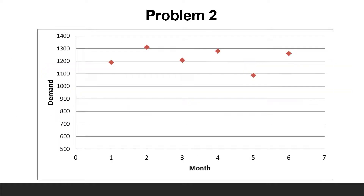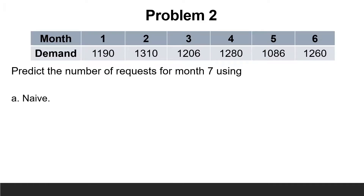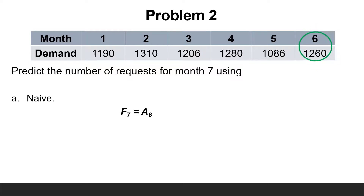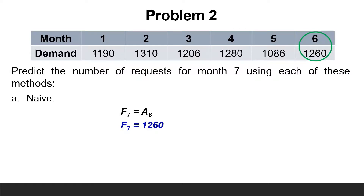Again, the plotted data shows that variations around an average exist, and there is no trend or cycles. So let us move to the next step to make the forecast using different techniques. The first technique is the naive approach. Since the data vary around an average, the forecast for month 7 equals the actual demand in month 6, or F7 = A6. So F7 equals 1260.